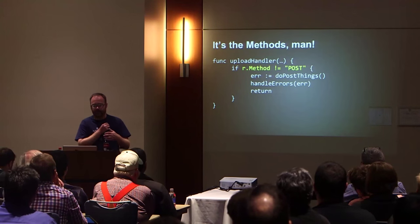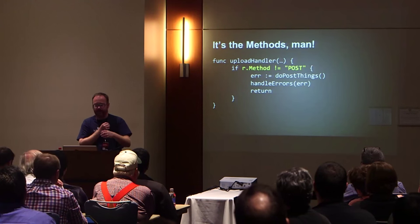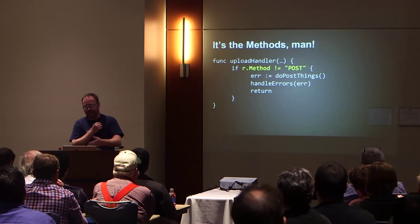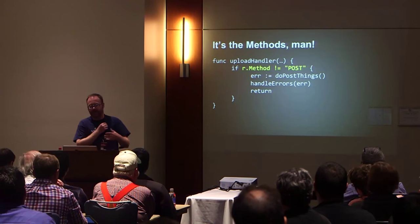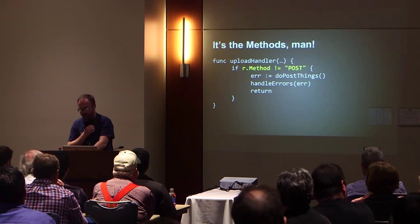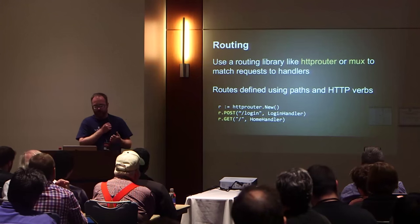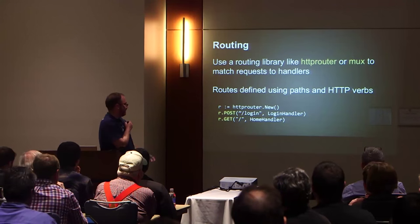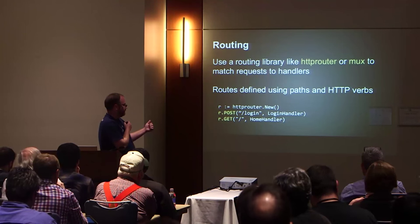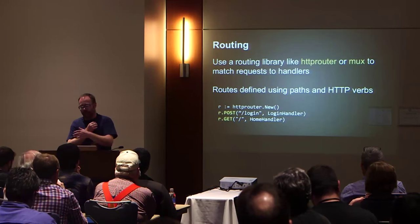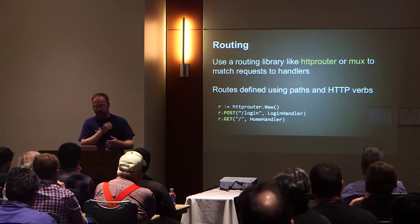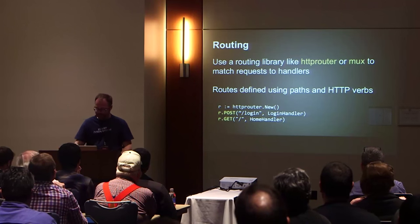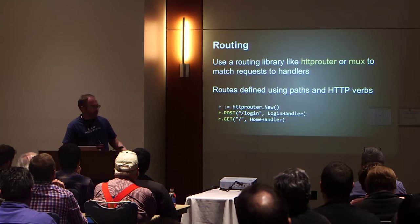When you first start building a web app, you have handler functions — a request to this URI goes to this function, a request to that URI goes to another. Every one of them has to check what method was used, whether a header was present, whether the person was logged in. You quickly figure out the need for a routing library. There are several — it's almost a religious debate — but one called HTTP Router is very fast. It allows you to set up a request so a POST to a URI goes to one handler, but a GET goes somewhere else, giving you a lot more control.